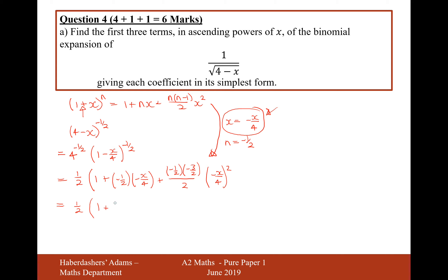Simplifying inside the brackets: the first two terms give 1 plus x/8. For the third term, the numerator is positive 3, because minus a half times minus 3/2 gives positive 3/4, and dividing by 2 gives 3/8 — but we also need the denominator from x squared: 2 × 2 × 2 × 4 × 4 = 8 × 16 = 128. So the third term is 3/128 · x².